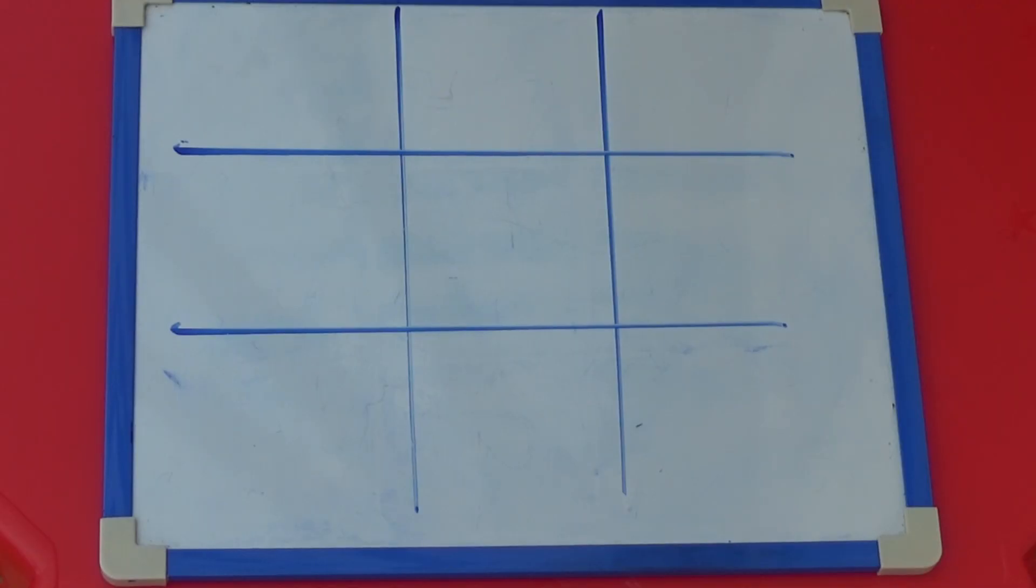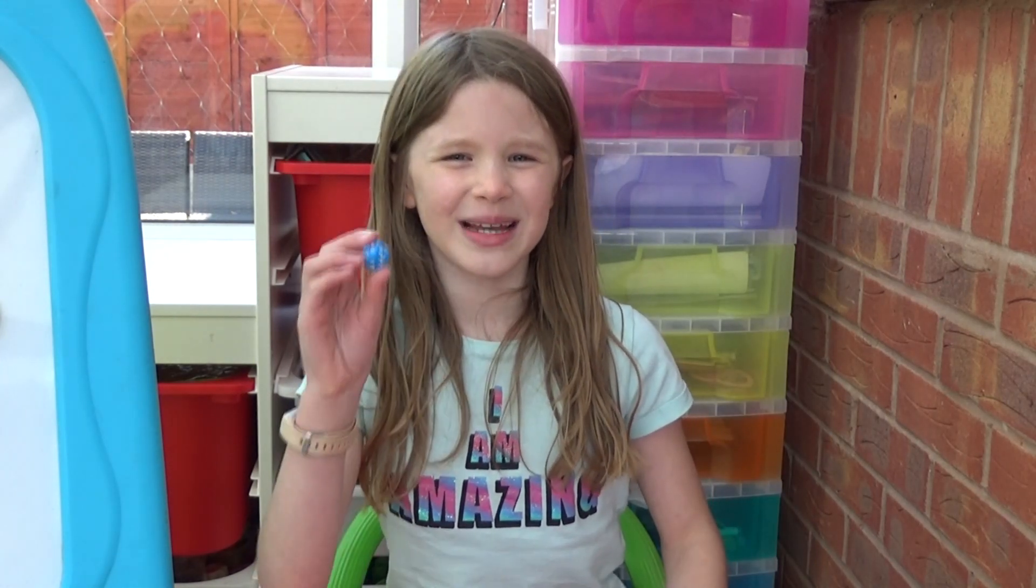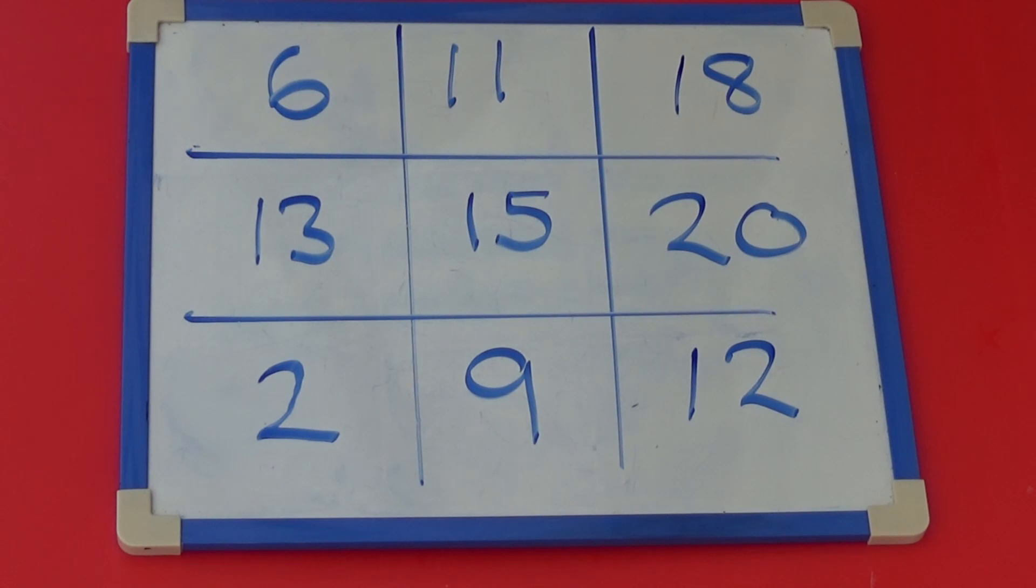First we need to draw out our Tic-Tac-Toe or Noughts and Crosses grid. We then need to generate 9 numbers between 1 and 20 to go in the grid. You can use a set of 1 to 20 cards or a 1 to 20 dice to generate your numbers. Once I've filled my grid with numbers we can start the game.